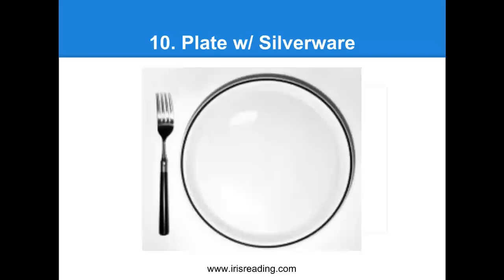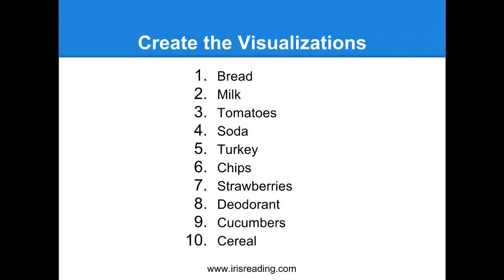Now that we've got our Numeric PEG system for one through ten, we need to create the visualizations. Step one is having the numeric peg system in place — we already have it. We don't need to memorize it ever again because we'll always remember that number one is a pencil, two is a swan, three is McDonald's, and so on. The way we remember things is through association and visualization — plus repetition. Let's take association and visualization: we want to visually associate number one, which is a pencil, with bread.